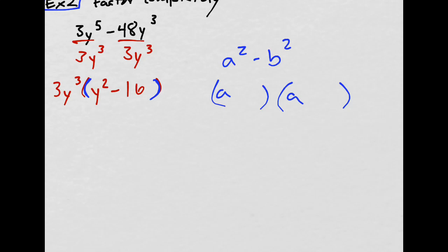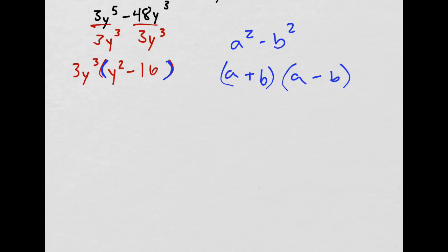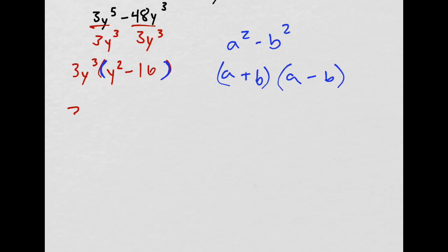That can be reduced to (a+b)(a-b), where a goes in the first spots, b in the second, and then one addition, one subtraction. So you take the square roots and put them in there. But first, I'll copy down the 3y cubed.